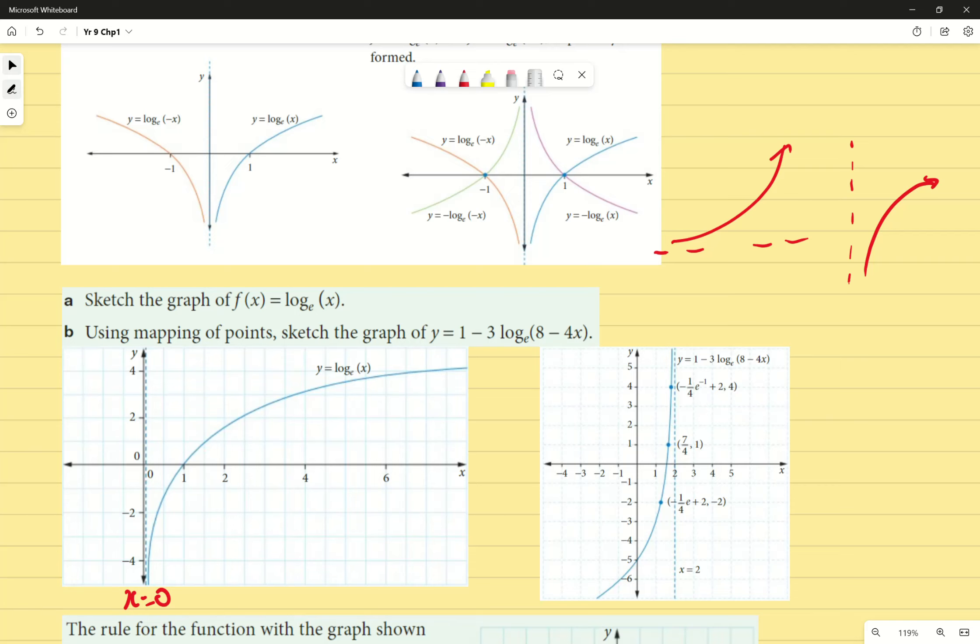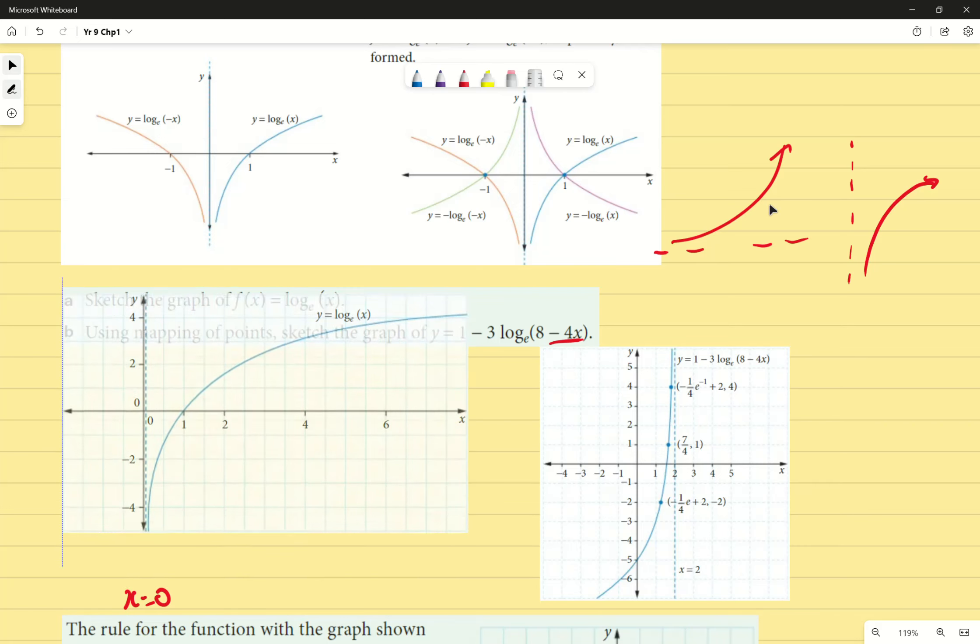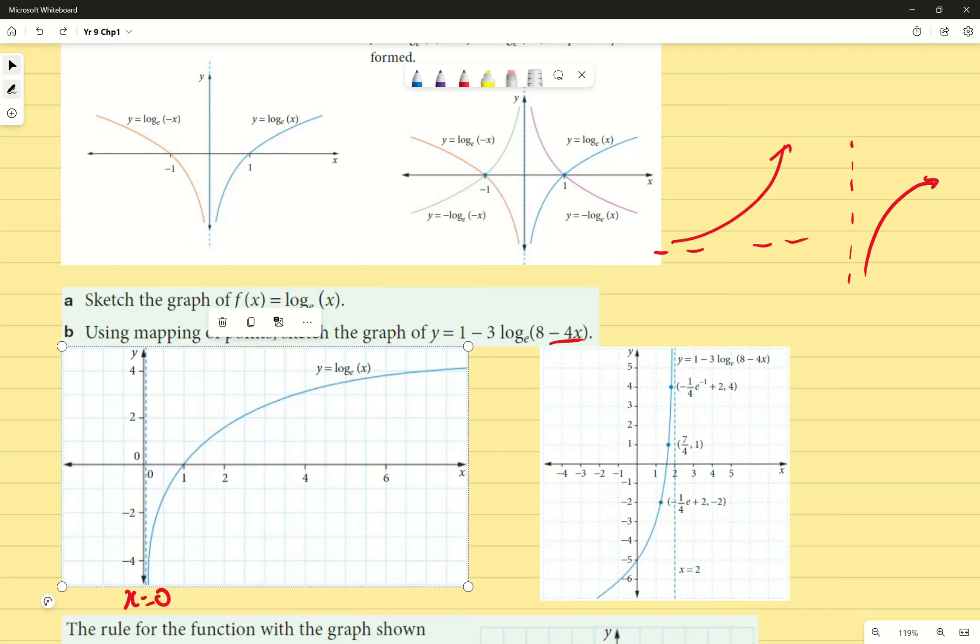Using the mapping of points, sketch the graph of y equals 1 minus 3 times log base e of 8 minus 4x. In this case, it's specified mapping of points. You don't need to do that in most assessment circumstances, but that would just imply that you substitute a value of, for example, x equals 1, x equals 2, etc., to see where that would go. I can see that it's going to be reflected in front of the x, which means it's going to be reflected across the y-axis. So instead of the function looking like this, it's going to end up looking something like this.